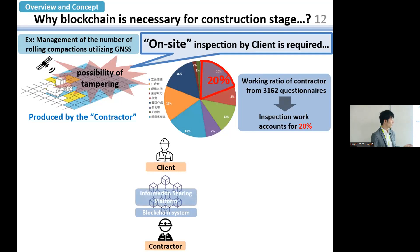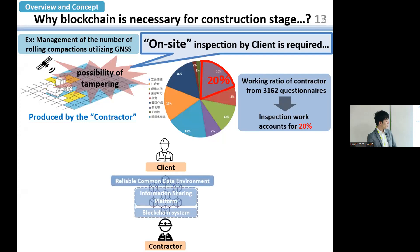So here is our idea. If we can guarantee the reliability of information between client and contractor utilizing the blockchain system, we can rationalize this on-site inspection, which would have a very big impact on our industry. Not only the blockchain system, we also need an information sharing platform to visualize and analyze the as-built data and quality. In total, we call this the Reliability Common Data Environment, and in this research, we conduct a proof-of-concept of this system.